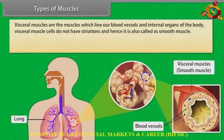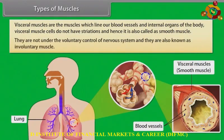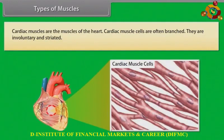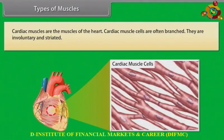Visceral muscles are the muscles which line our blood vessels and internal organs of the body. Visceral muscle cells do not have striations, and hence are also called smooth muscle. They are not under the voluntary control of the nervous system and are also known as involuntary muscles. Cardiac muscles are the muscles of the heart; they are involuntary and striated, and cardiac muscle cells are often branched.